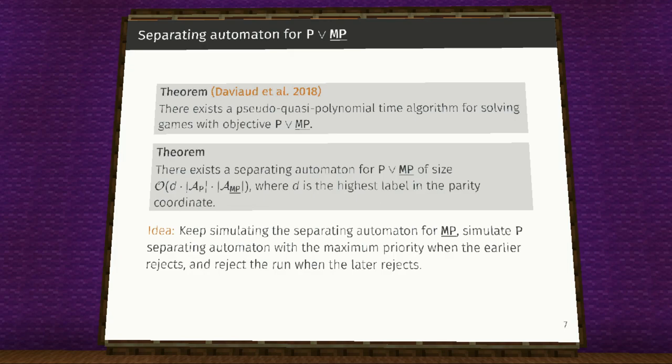The idea is to keep simulating the separating automata for mean payoff with infimum and to simulate parity separating automata with maximum priority when the earlier reject and reject the run when the parity separating automata rejects. The construction for parity or mean payoff with supremum is exactly the same.